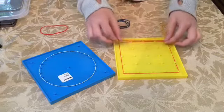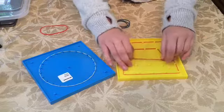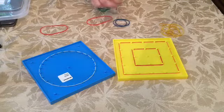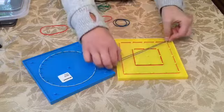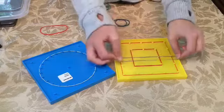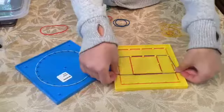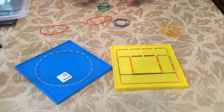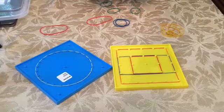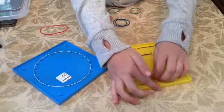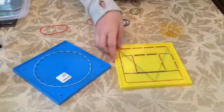Now can you make, using a blue rubber band on the yellow board, make a rectangle? Good. Now using the green rubber band on the yellow board, make a triangle. Great.